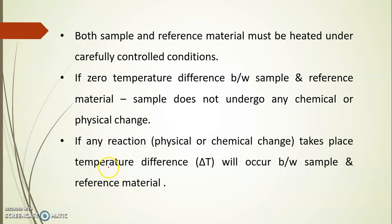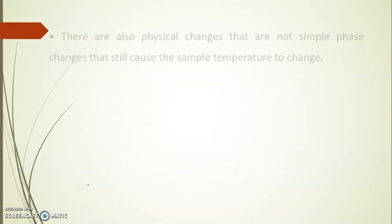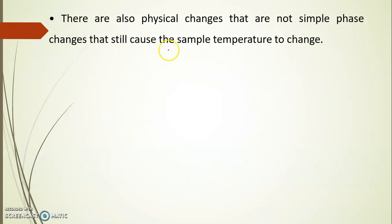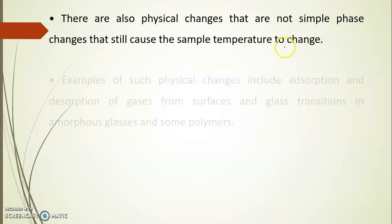But if there are some physical and chemical changes observed, then differential temperature is recorded and it is plotted. If any reaction such as physical or chemical change takes place, temperature difference will occur between the sample and reference material. There are also physical changes that are not simple phase changes that still cause the sample temperature to change.